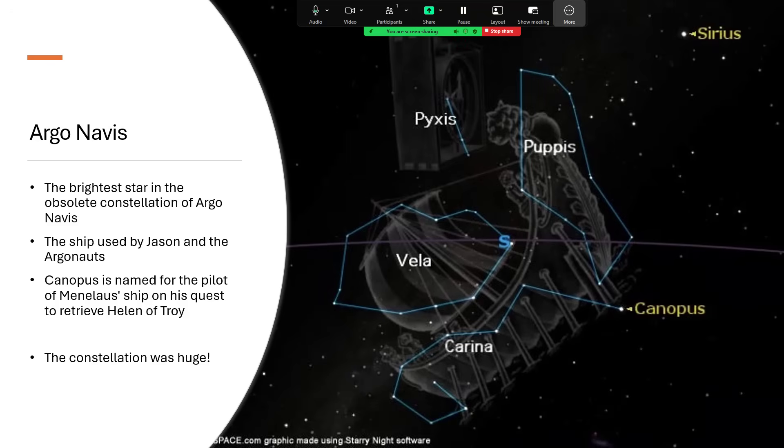The name comes from the pilot of Menelaus's ship when he went on his quest to try and retrieve Helen of Troy, so that's where the name Canopus comes from.